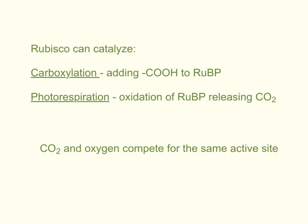Welcome to part three of photosynthesis, covering section 8.7 of chapter 8. Before we begin, we need to remember that rubisco is the enzyme used in the Calvin cycle in the first phase, called carbon fixation. This enzyme converts six RuBP and six carbon dioxide molecules into 12 PGA — that is the carbon fixation step.